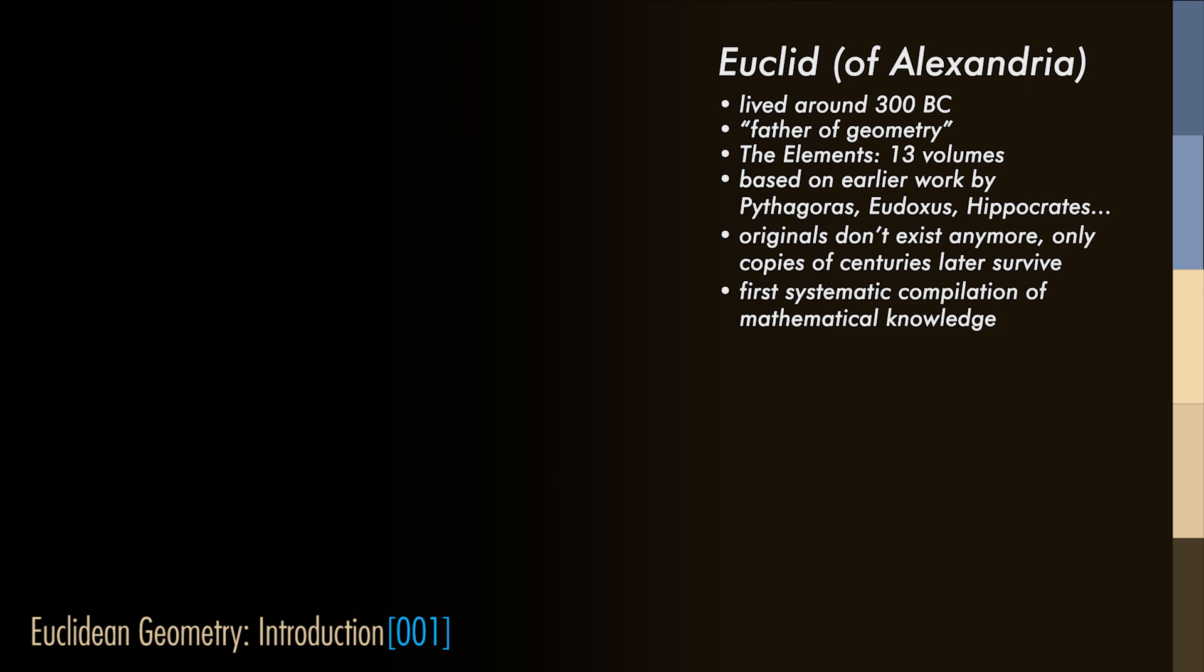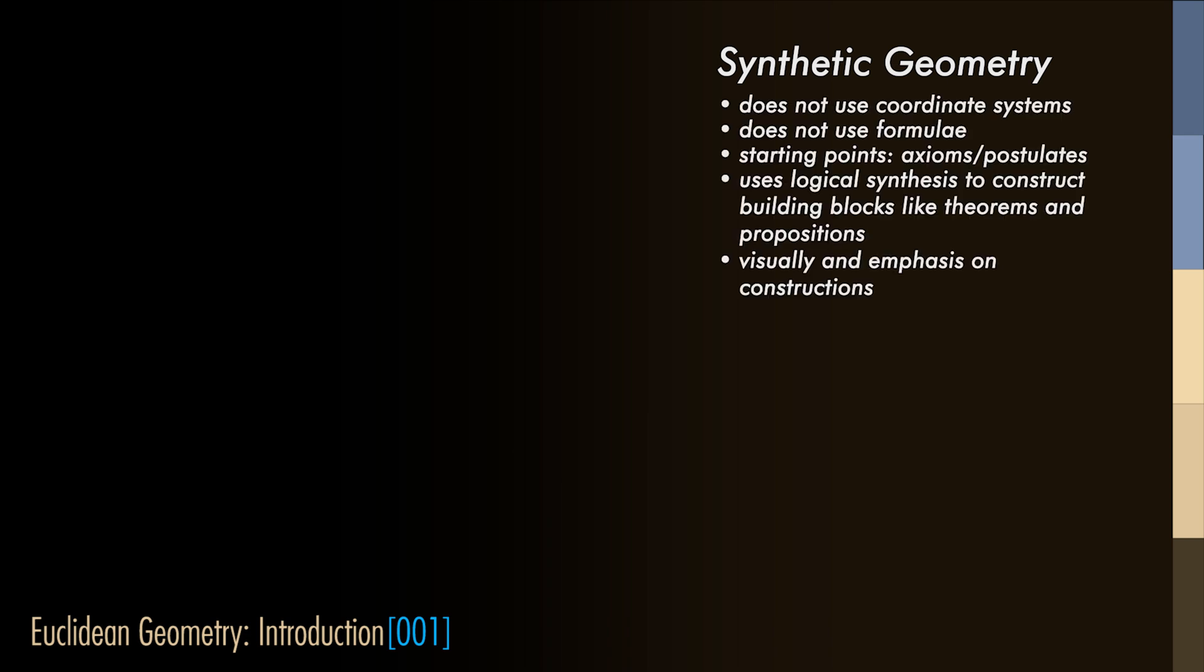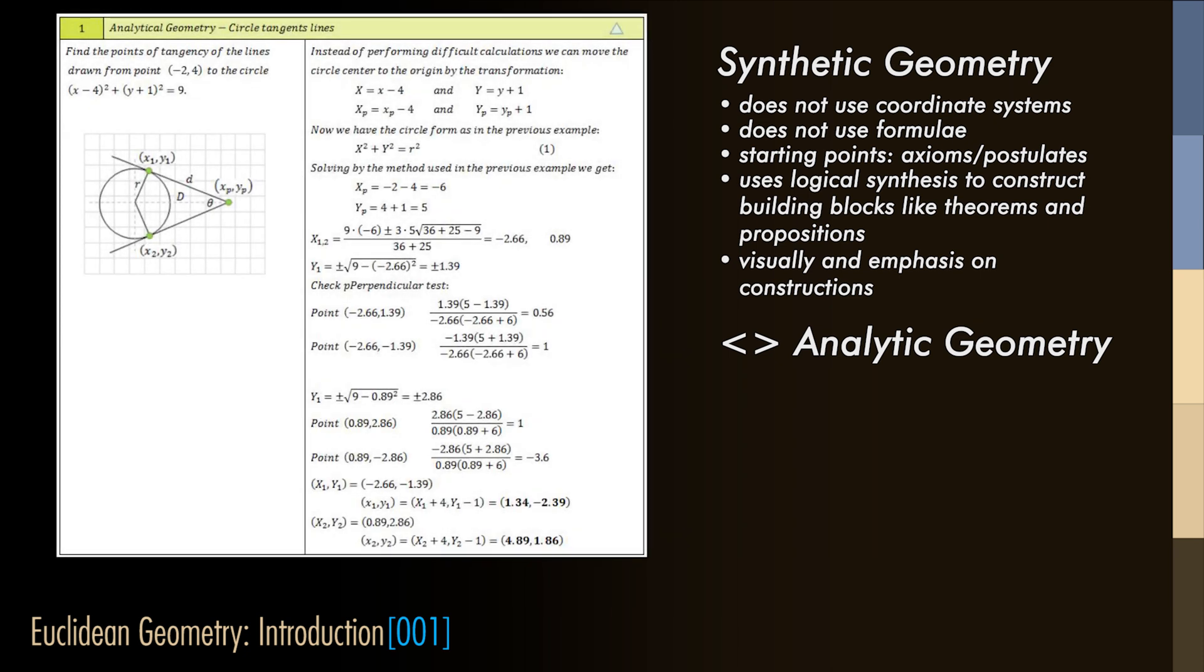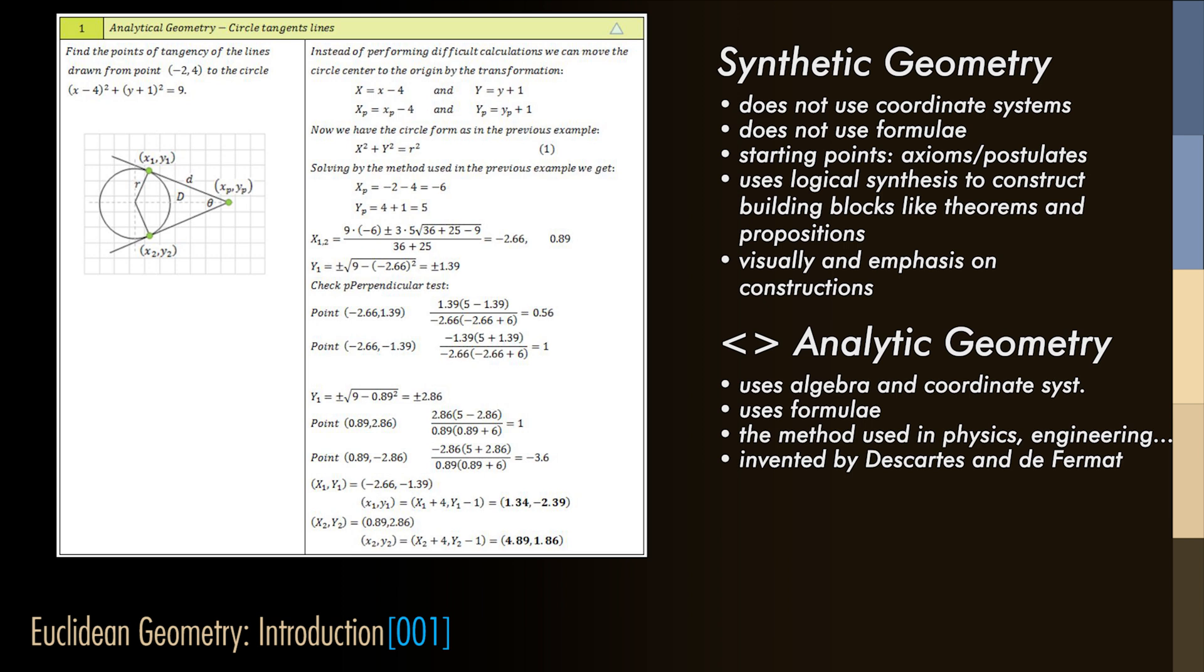We will construct in a similar way this course. The method that is used in Euclidean geometry is known as synthetic geometry. This method, also used by Euclid himself, starts from axioms and builds up the theory by using properties to prove theorems. It is a method that does not use coordinates at all. This is in contrast to analytic geometry, which uses algebra to pose and prove theorems.